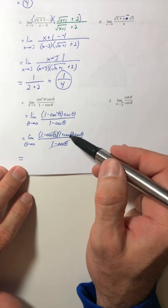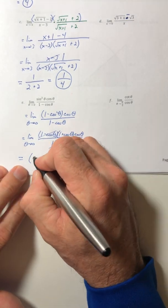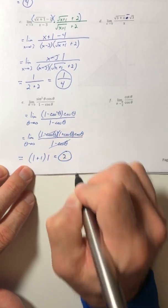The one minus cosine is cancel. Now you can plug in the zero for your theta. So cosine of zero is one. And that's going to come out to two.